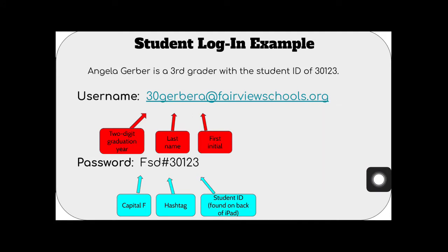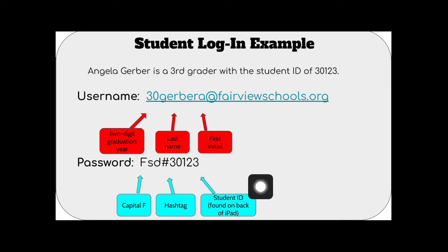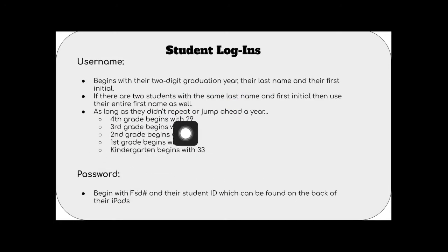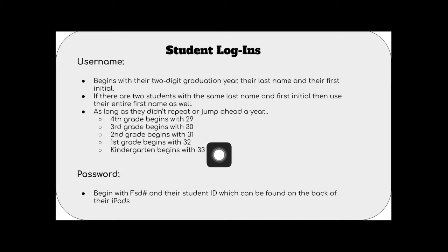The password is: capital F, lowercase 'sd' for Fairview School District, hashtag, then your five-digit student ID. That student ID is found on the back of the student iPad on a white piece of paper — there's a 'P' in front of it, but you don't use the P, just the five-digit number. The graduation year patterns: fourth graders begin with 29, third with 30, second with 31, first with 32, and kindergarten with 33. There may be exceptions for students with the same last name and first initial in the same grade.